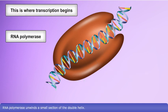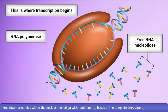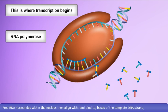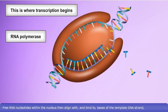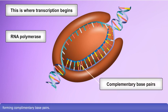RNA polymerase unwinds a small section of the double helix. Free RNA nucleotides within the nucleus then align with and bind to bases of the template DNA strand, forming complementary base pairs.